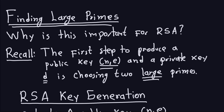Hello and welcome again. In this video we'll talk about finding large primes, and you might wonder why this is important. I mentioned this in the last video but let's just review. Why is this important for the RSA encryption?